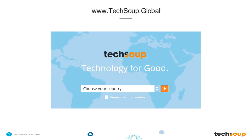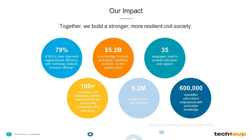We are seeing folks joining from Minnesota, Boca Raton, Scottsdale Arizona, Denver — all around the country. Thank you so much for joining us today. A little bit about TechSoup Impact: we have helped organizations get more than $5.2 billion in technology products and grants to NGOs around the world. These tech products and grants come from more than 100 corporate and foundation partners.